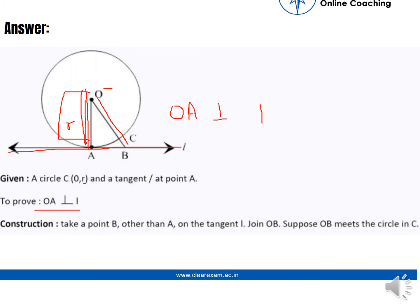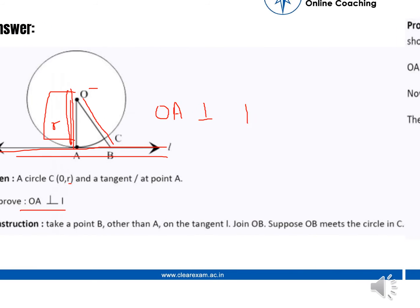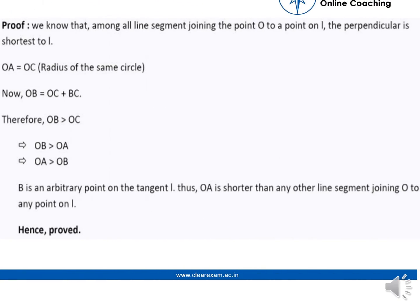To prove this, we do a construction. We take any other point B on the tangent line L, join OB, and let OB meet the circle at point C. So OC is a radius of the circle.